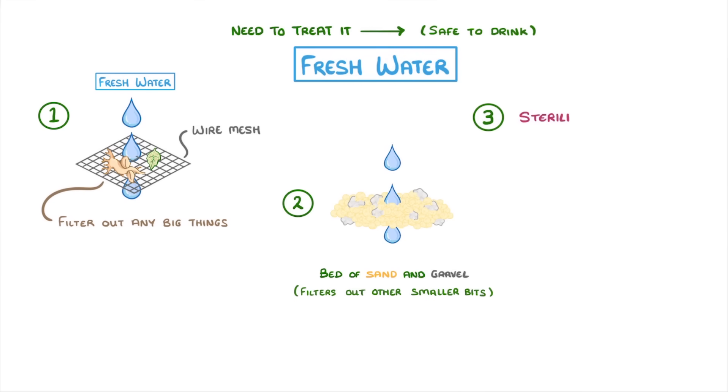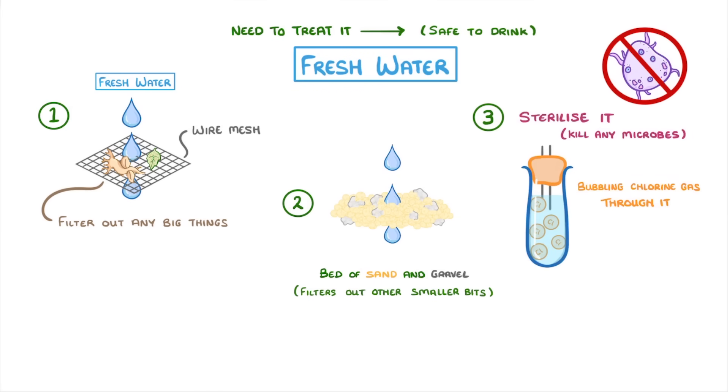And finally we have to sterilize it to kill any harmful microbes like bacteria, which we can do in three ways: either bubbling chlorine gas through it, or exposing it to ozone, or ultraviolet light.